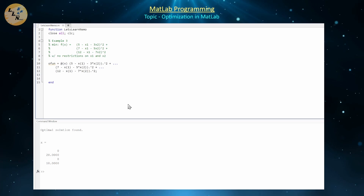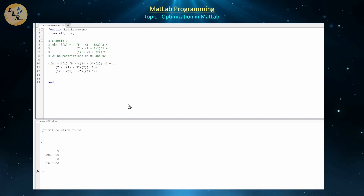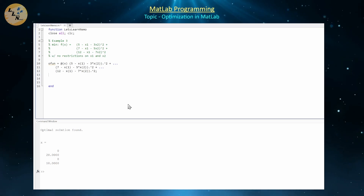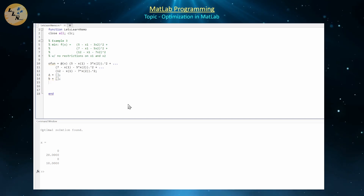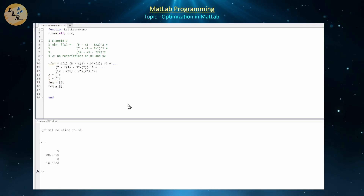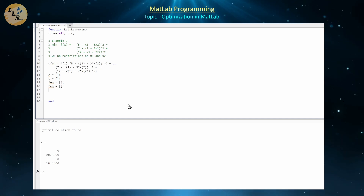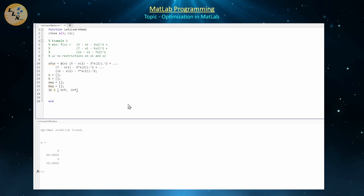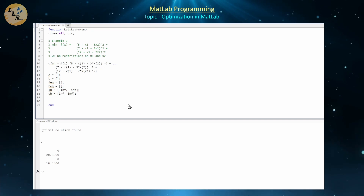We then define the restriction matrices. There are no less-than-or-equal-to constraints, no equality constraints, so A, B, Aeq, and Beq are all empty. There are no restrictions on x1 and x2, so they range from −∞ to ∞. The lower bound is [−inf, −inf] and the upper bound is [inf, inf].